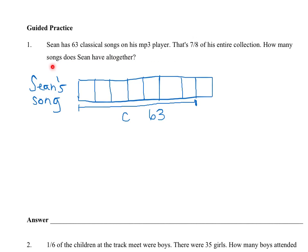It says, how many songs does Sean have all together? So all together would be his entire collection. I'm trying to figure out how much his whole collection is worth. What I'm basically saying is 63 has been divided into one, two, three, four, five, six, seven equal units. So I know that seven units gives me 63.